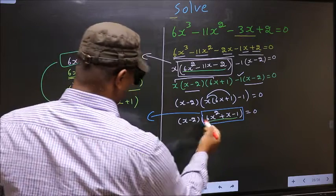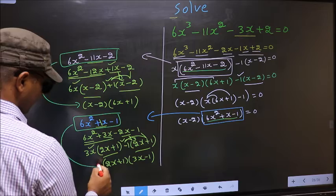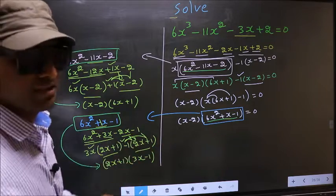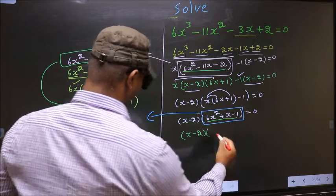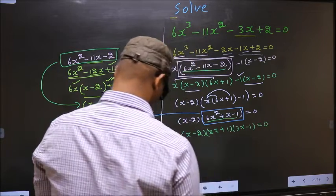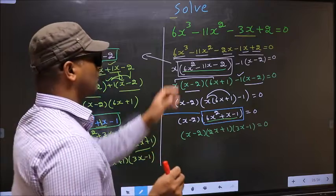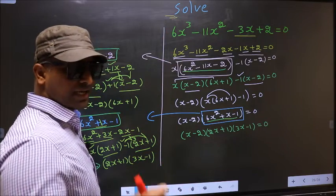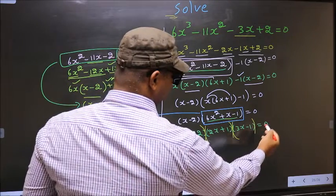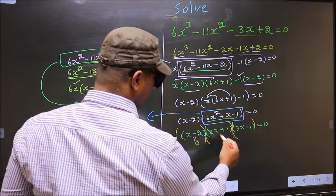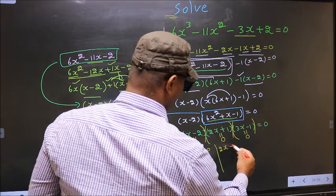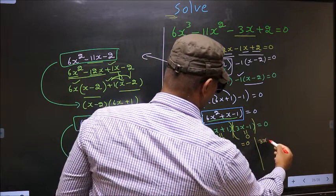Now in place of this quadratic we should write this factored form. So this equation becomes: x minus 2, times 2x plus 1, times 3x minus 1, equal to 0. We should find the values of x, and over here we got a product of brackets equal to 0. So to get x values, we should equate each bracket to 0: x minus 2 equal to 0, 2x plus 1 equal to 0, 3x minus 1 equal to 0.